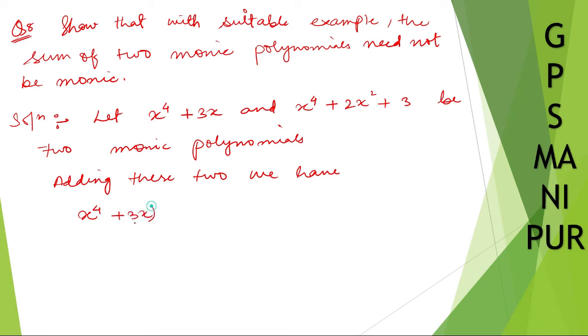x to the power 4 plus 3x. This is monic because the highest power has 1 as a coefficient. Plus x to the power 4 plus 2x square plus 3. So if you add this one.